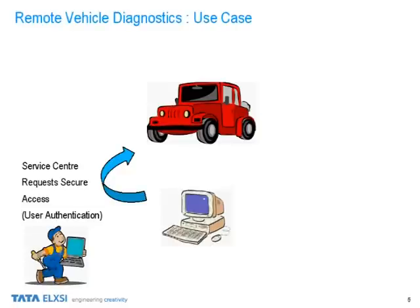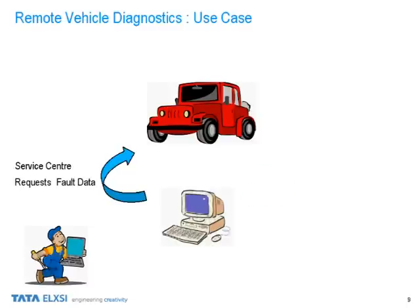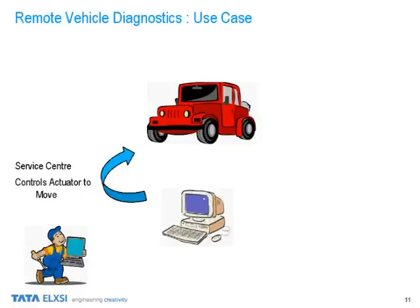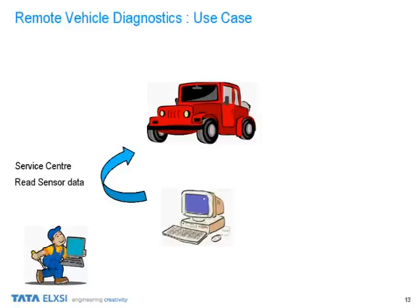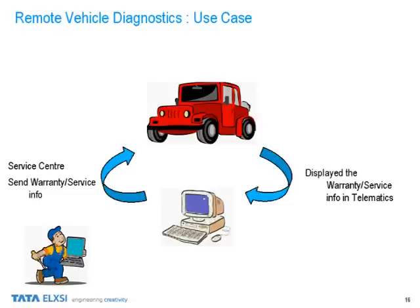The use case we implemented is as shown. First, user authentication, wherein the service center requests vehicle connection by login credential. The vehicle allows user access if it matches. Device authentication: the service center ensures vehicle authentication by sending a random key. The vehicle allows user access if the key is matched. Now the vehicle is connected. The service center requests file data and the vehicle provides it. The service center can control input and output, for example, activate a motor. The vehicle responds. The service center reads or monitors data, for example, sensor data, and the vehicle provides it. The service center sends information, for example, service warranty expired, and it is displayed in the Telematic ECU so that car owners get an alert.